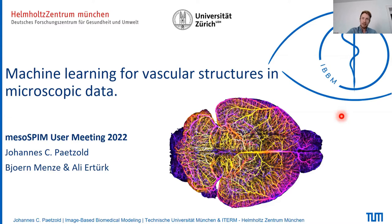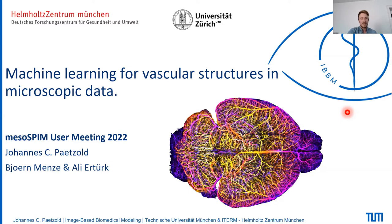I will talk about machine learning for vascular structures today, because this was my main topic. But in our AI team, we have also solved a lot of similar problems for all kinds of different biological structures — think about cancer cells, cancer metastasis, other cells, DNA origami, even liquid nanoparticles as seen in the modern COVID vaccines. All of these have been imaged in the Ertürk lab, and part of our group is busy developing machine learning methods for all of these.